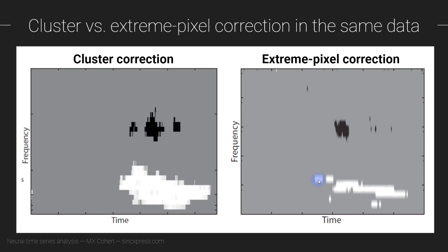A second observation is that with extreme pixel correction you can have one or two pixels standing completely by themselves. This might look like a single pixel all the way at the edge of the map. My intuition is that this is not something I would trust or write an entire scientific paper about, but technically it does survive our statistical thresholding.